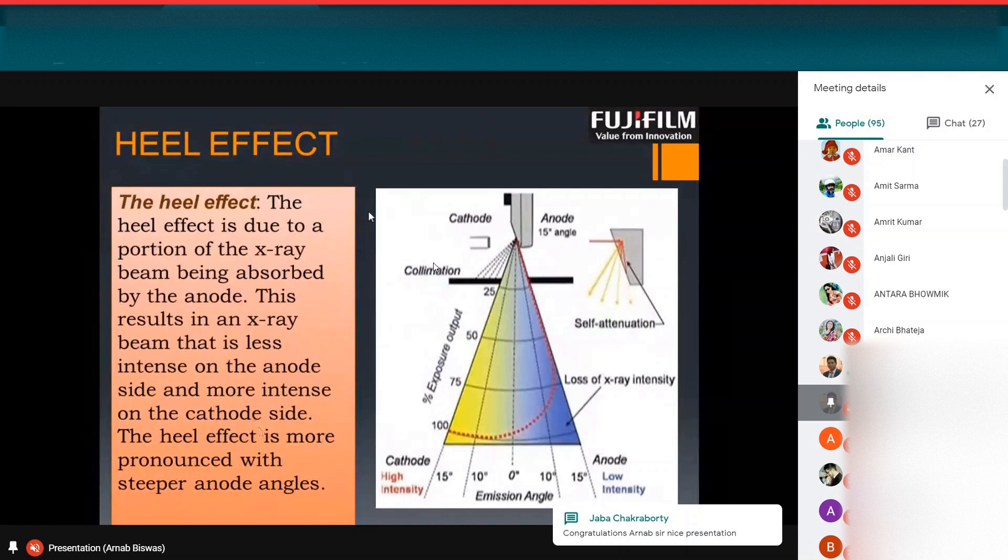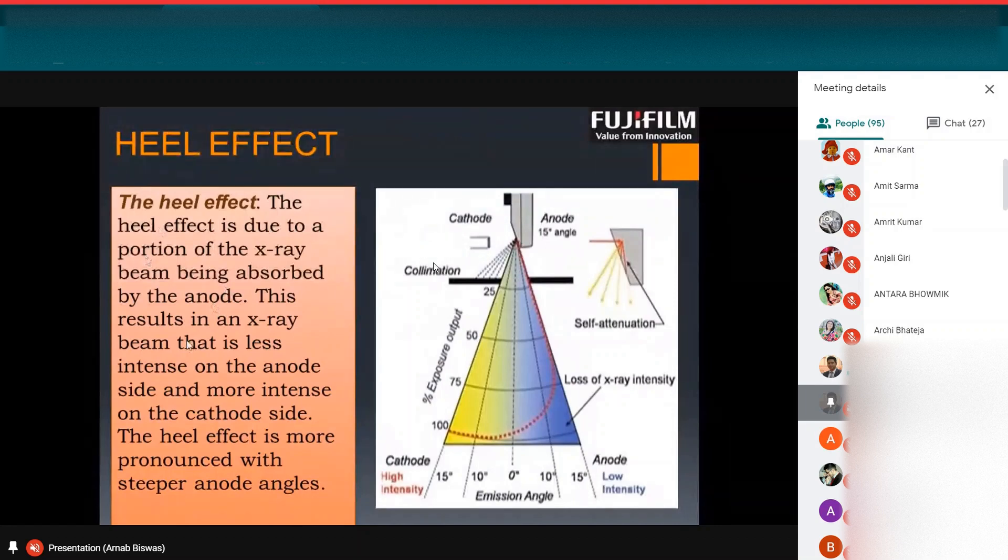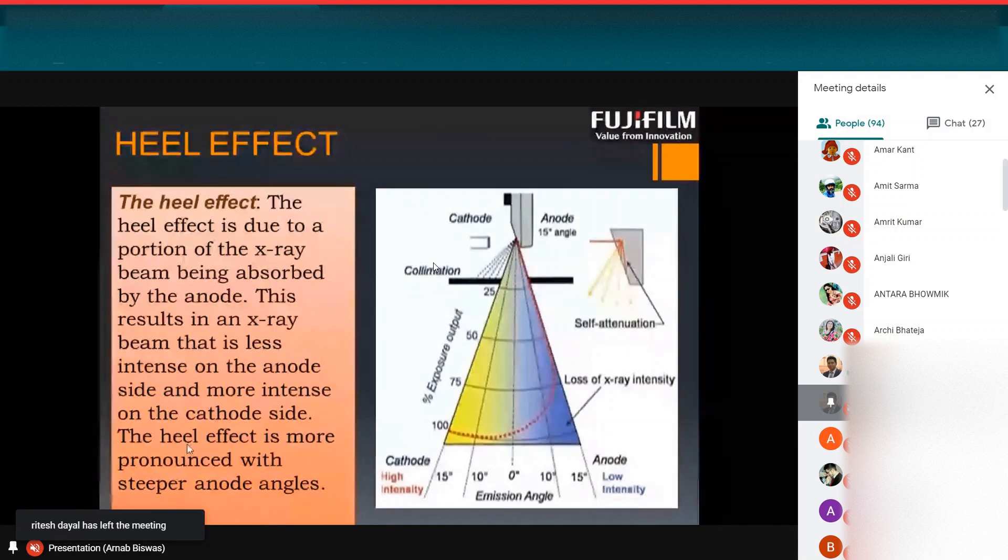What is heel effect? The heel effect is due to a portion of the X-ray beam being absorbed by the anode. This result in an X-ray beam that is less intense on the anode side and more intense on the cathode side. The heel effect is more pronounced with steeper anode angles.